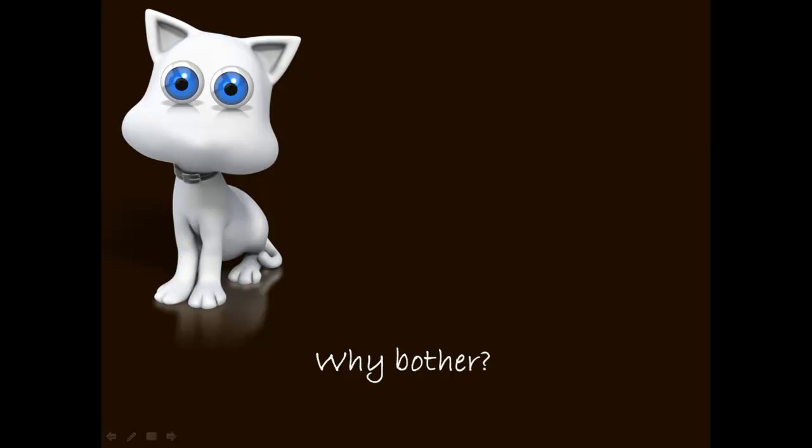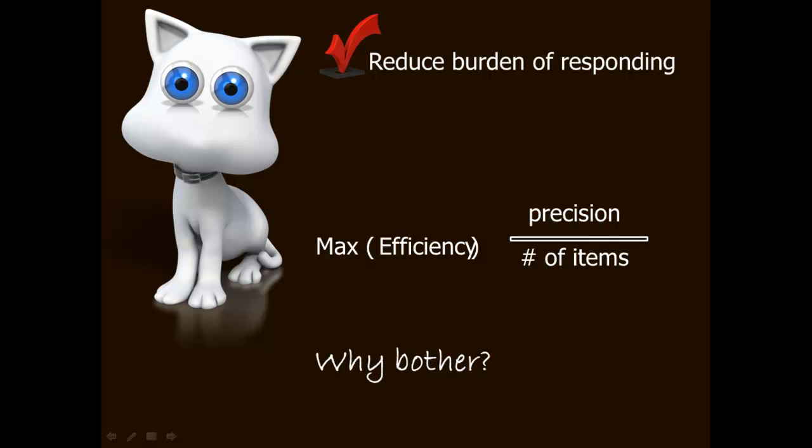Well, if you think of measurement efficiency as the precision that you get relative to the number of items that are administered, the CAT algorithm maximizes this efficiency. That means the burden of responding to items is lessened. So you get less burden from one assessment. And that also makes room for measuring more domains. There's increasing realization of just how many psychosocial domains influence health outcomes. If you want to measure several of these, then it's important that you do so with as much efficiency as you can muster.